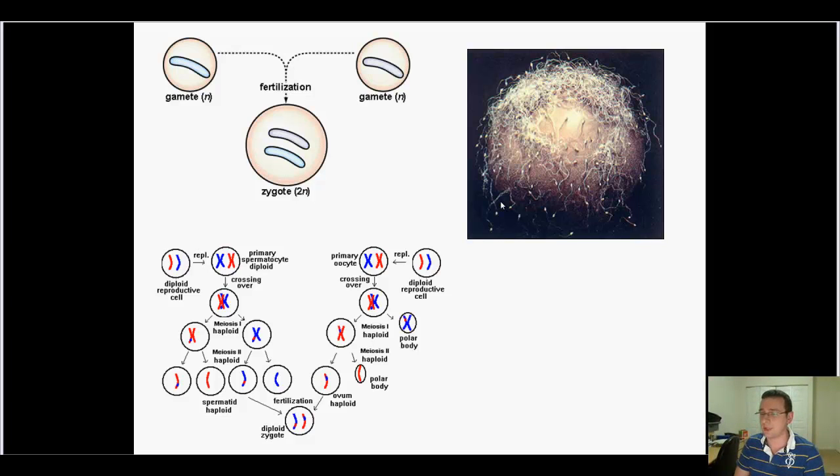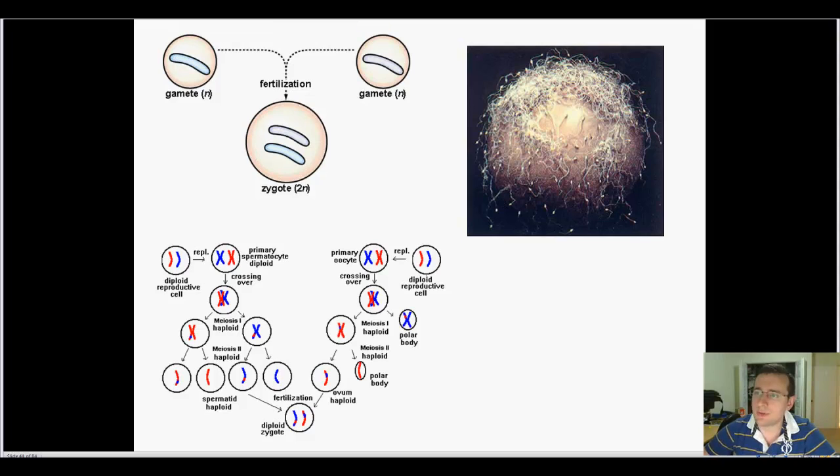Crossing over, independent assortment and separation of homologs, and random fertilization all create variation in the cell. Meiosis is the process by which cells divide and create gametes for sexual reproduction purposes, where each gamete is a half cell that can combine with another half cell to make a new organism. It's through these processes that eukaryotes create a lot of their variation in addition to mutation processes. That's why meiosis is so important and I hope these lectures made that clear to you. I'll see you on the next video lecture. Thank you very much.